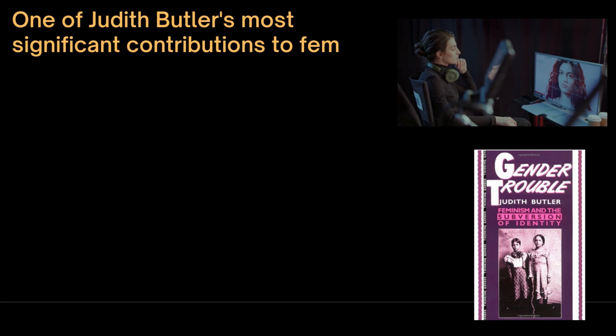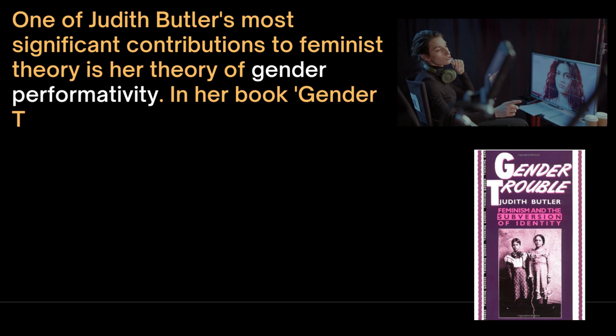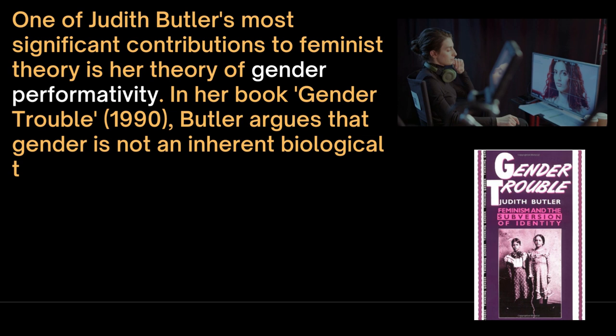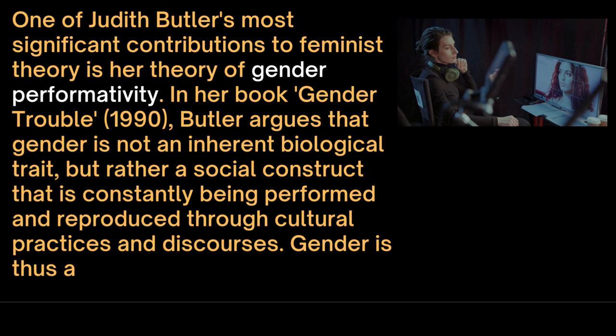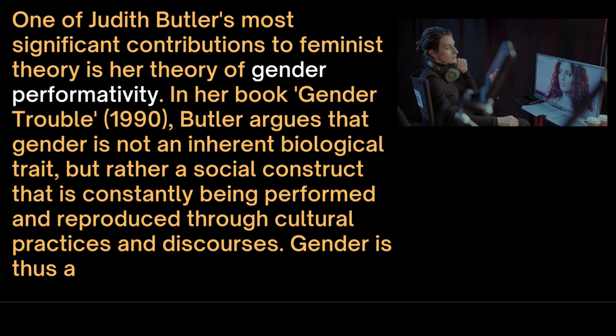One of Judith Butler's most significant contributions to feminist theory is her theory of gender performativity. In her book Gender Trouble in 1990, Butler argues that gender is not an inherent biological trait but rather a social construct that is constantly being performed and reproduced through cultural practices and discourses. Gender is thus a performative act rather than a fixed identity.